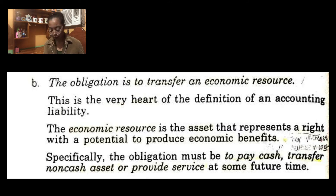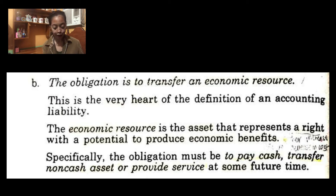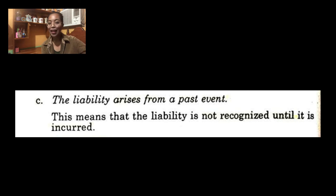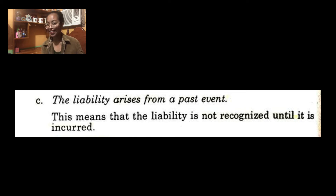It can produce economic benefits — either an increase in revenue or a decrease in cash. The obligation must be to pay cash, to transfer a non-cash asset, or to provide a service at some future time. Liability arises from a past event, meaning it is already done. In accounting, that past event is important for us to consider a transaction a liability. So this means a liability is not recognized until it is incurred — based on the accrual method of accounting, we only recognize when it is earned or incurred.